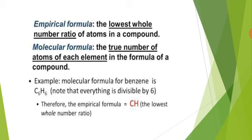Let us consider the example of benzene. The actual ratio of carbon to hydrogen atoms in a molecule of benzene is 6 ratio 6, hence its molecular formula is C6H6. Note that every number is divisible by 6. Therefore, the empirical formula of benzene is written as CH, which shows the simplest whole number ratio.